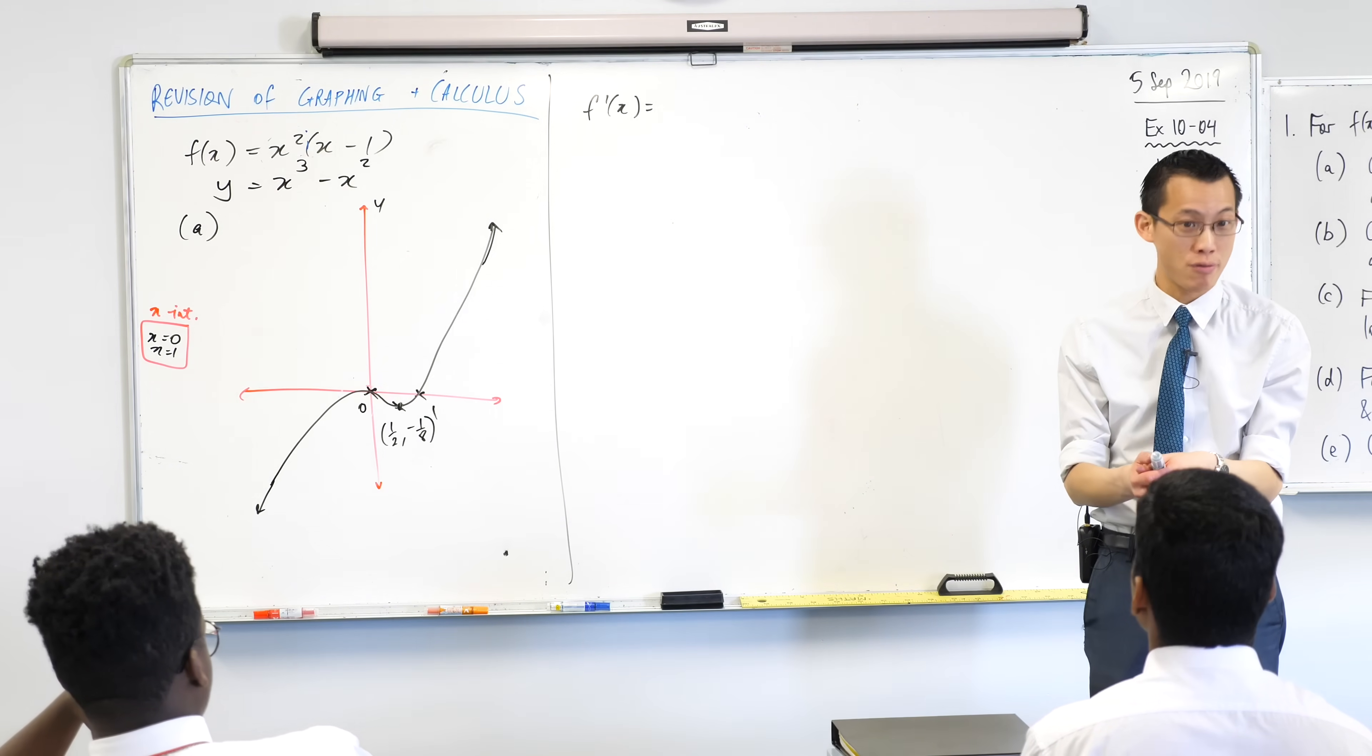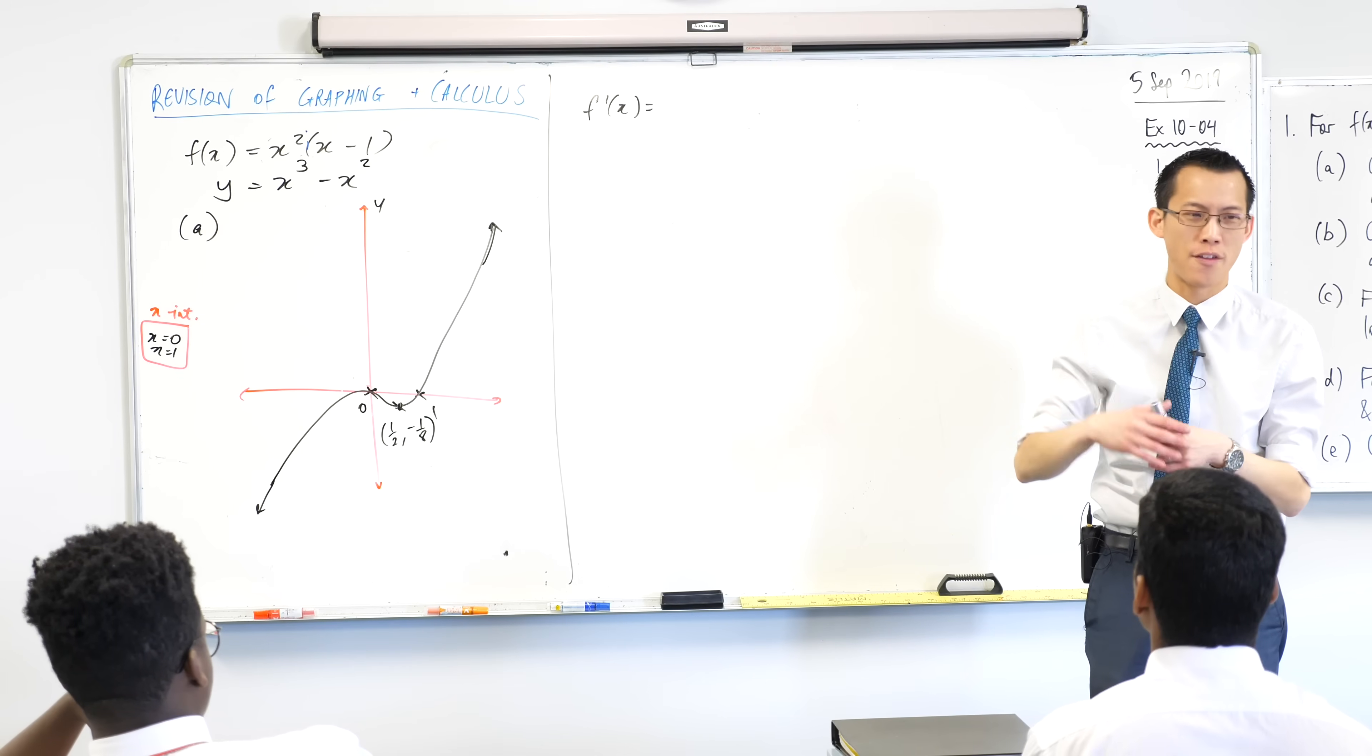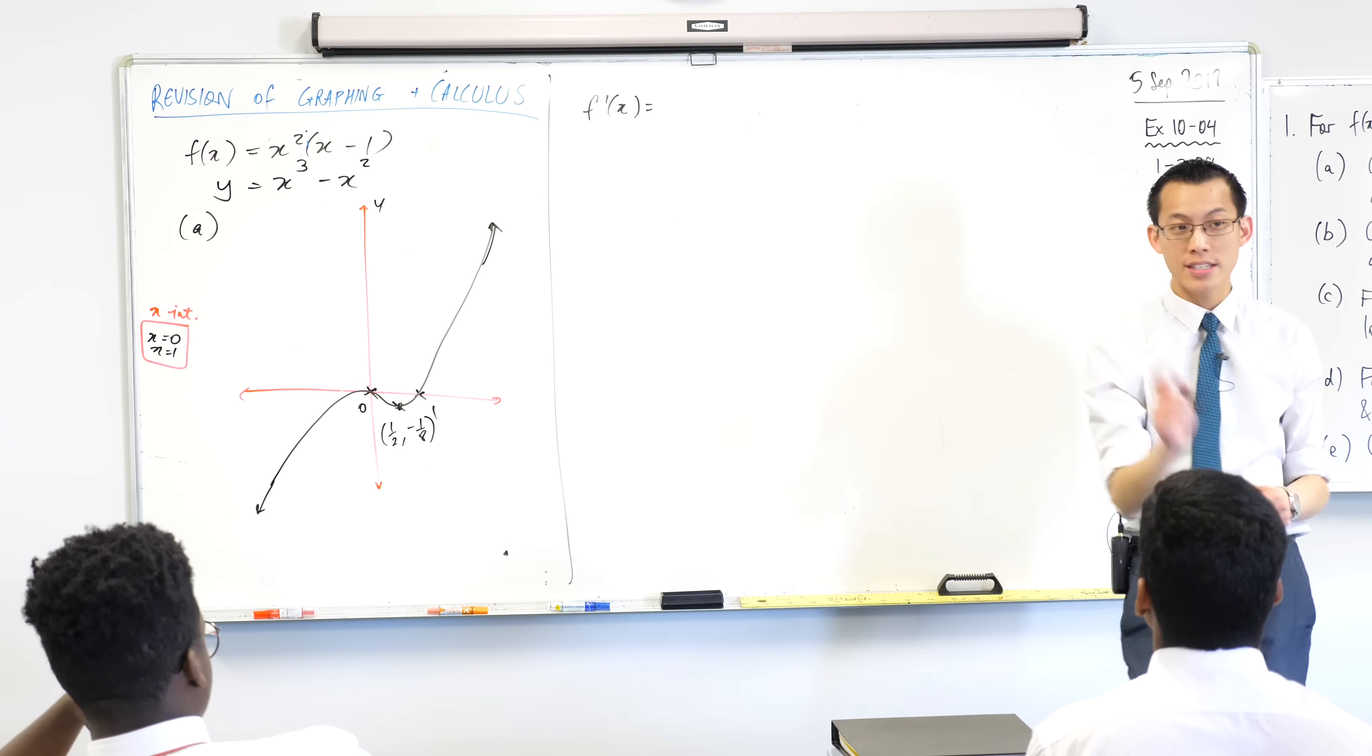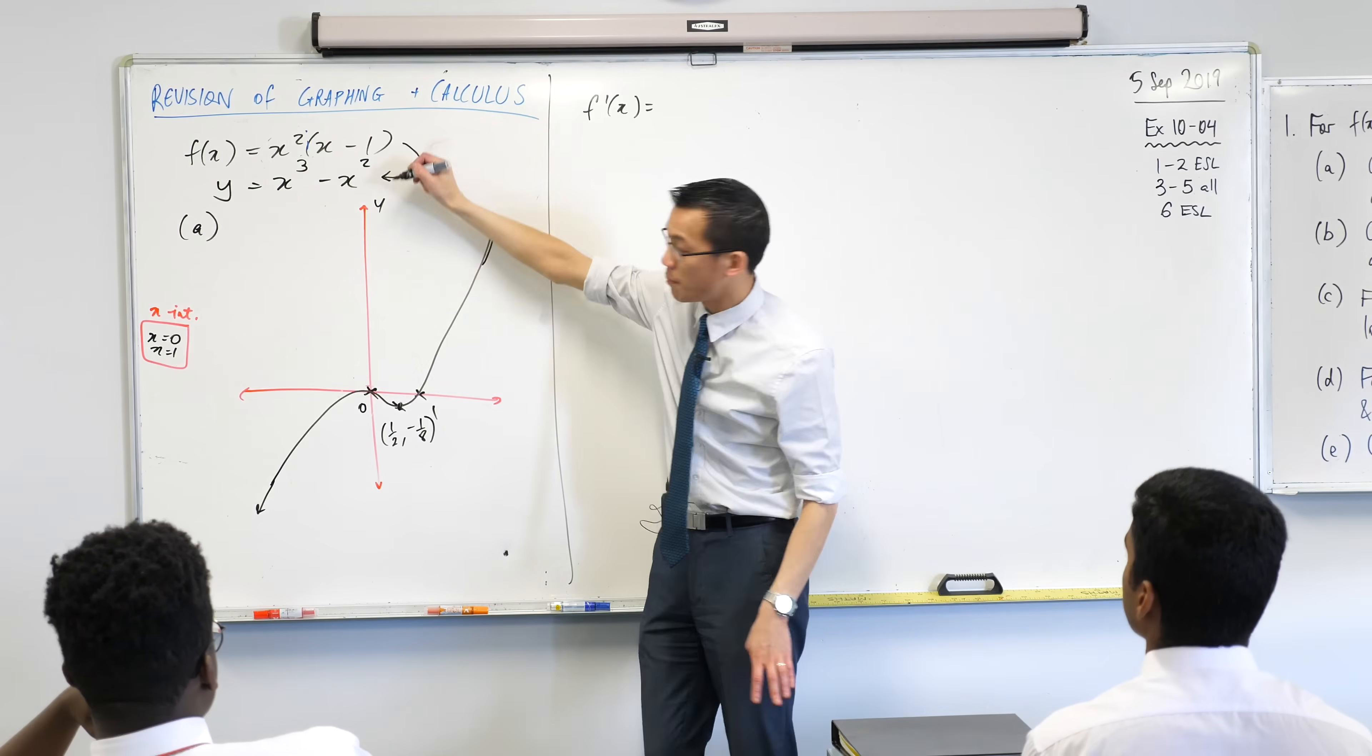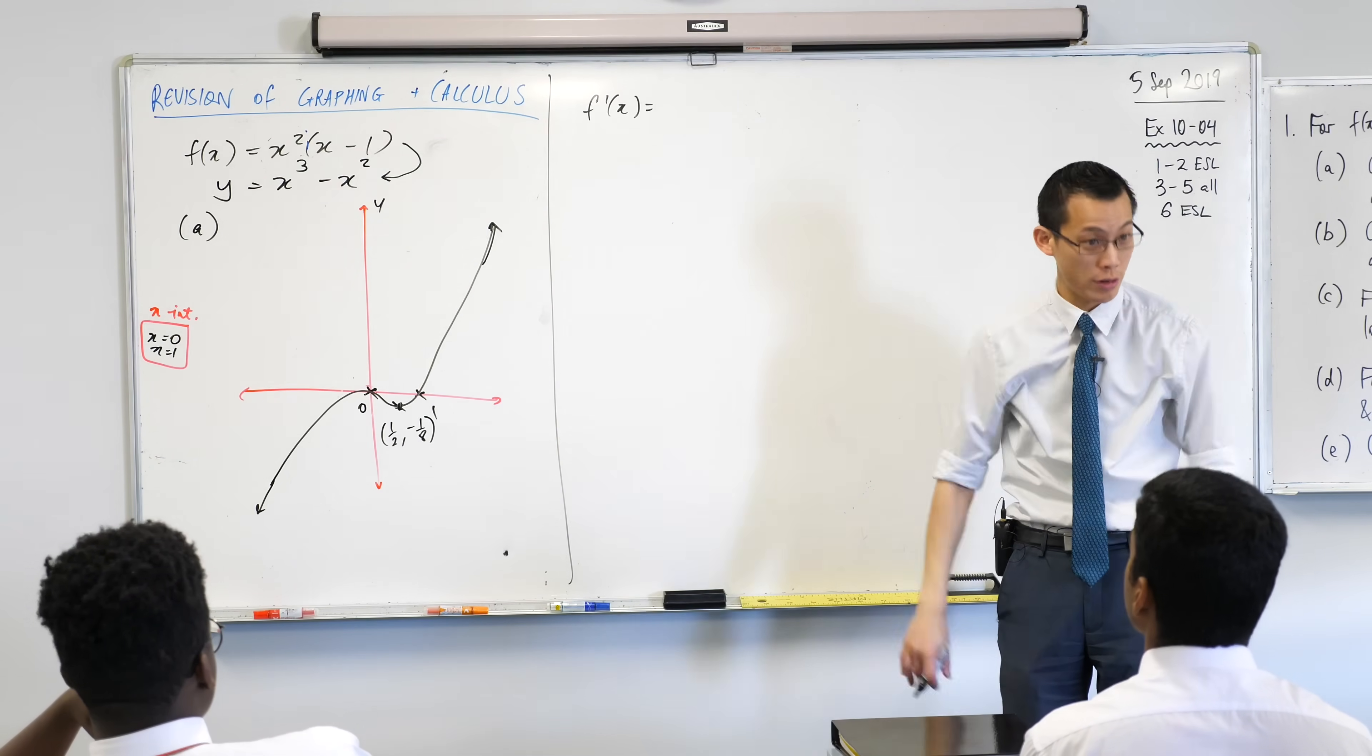You can use the product rule, it's just the real scenic route. It'll take you a good four or five more lines of working, and every line of working costs you time, introduces places you can make errors. So instead of going to this form and using the product rule, I'm going to go to this form, and then just treat it as a sum or difference of different things that I can treat independently.